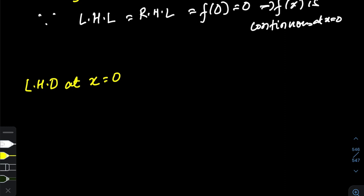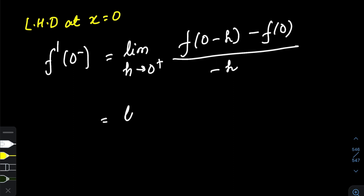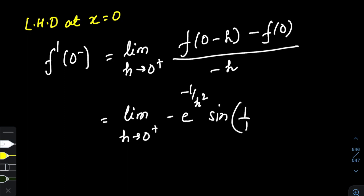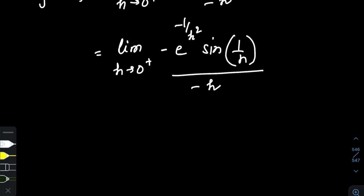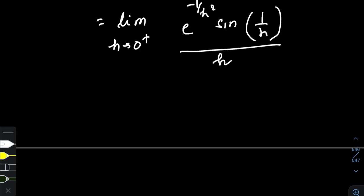For the left-hand derivative at x equal to zero, we use first principles: f dash zero minus equals the limit as h tends to zero plus of [f(0 − h) − f(0)] divided by minus h. Now f(0 − h) = f(−h) = e to the power minus one by h squared, times sine of one by minus h, so a minus sign comes out. Since f(0) = 0, this simplifies to: limit h tending to zero plus of e to the power minus one by h squared, times sine of one by h, divided by h.